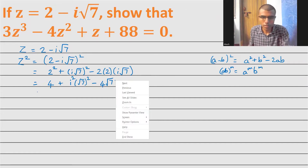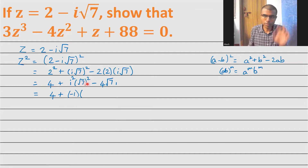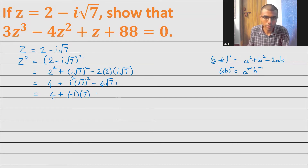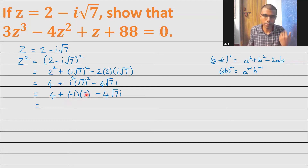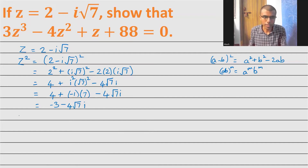Now i² = -1, and (√7)² = 7 — the square root and square nullify each other. So we get 4 + (-1)(7) - 4√7·i = 4 - 7 - 4√7·i = -3 - 4√7·i. So z² = -3 - 4√7·i.